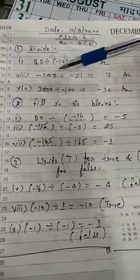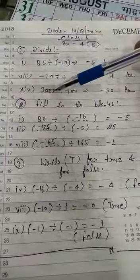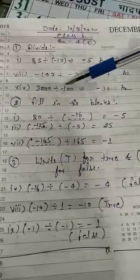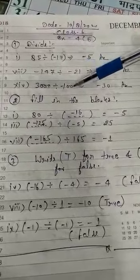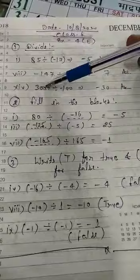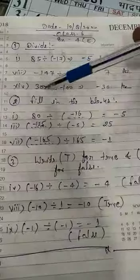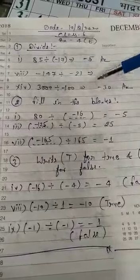3000 ko hame divide karna hai minus 100 se. 3000 ko hame divide karna hai minus ke 100 se, 20 se 20 cancel ho jayega. Ye plus ka hai, ye minus ka hai. 3000 aapka plus ka hai, hundred aapka minus ka. Plus minus minus ka, so minus 30 humara answer ho jayega.